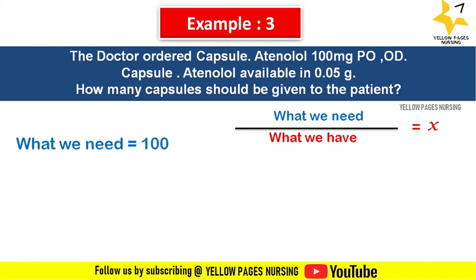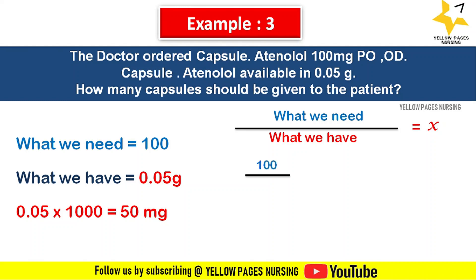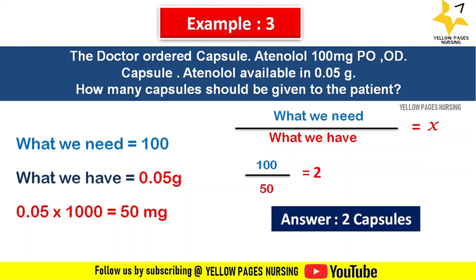What we have on hand is 0.05 gram, which we need to convert to milligrams. We multiply by 1000 and get 50 milligrams. Applying this in the formula, we get 100 divided by 50, which gives the answer 2. Hence two capsules need to be given to the patient.